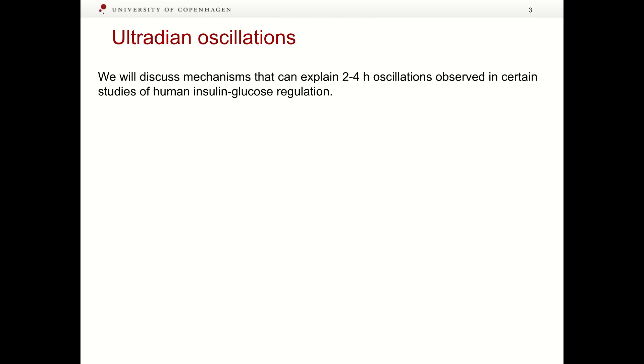Now, we will discuss mechanisms underlying ultradian oscillations that are 2-4 hours oscillations observed in certain studies of human insulin-glucose regulation. Oscillations with similar frequencies are known to occur for other hormones, although mechanisms are not likely to be the same.